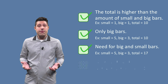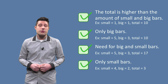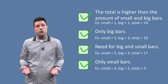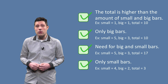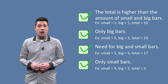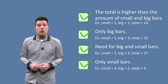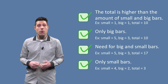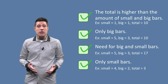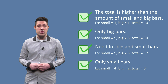And finally, we may need only small bars. If small equals 4, big equals 2, and total equals 3 kilos, then we can't use the big bars — after all, they are 5 kilos each. So we should only use our small bars, which in this case means 3 small bars. Thus, the program must return 3.